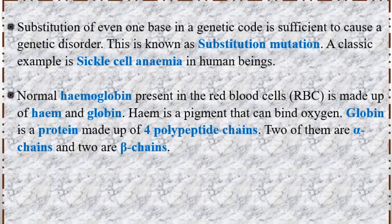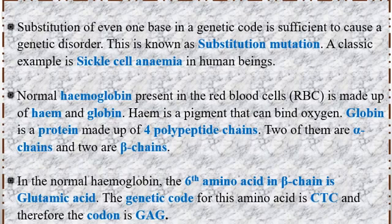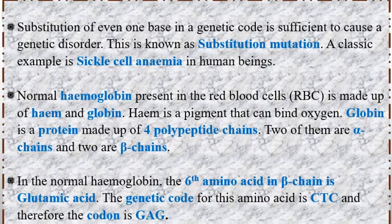This polypeptide is a chain of amino acids. In normal hemoglobin, the 6th amino acid of the beta chain is glutamic acid. The genetic code for glutamic acid is CTC, and the mRNA codon is GAG.